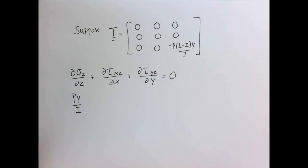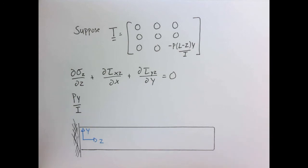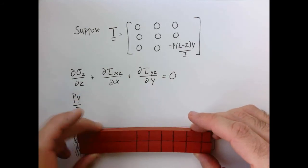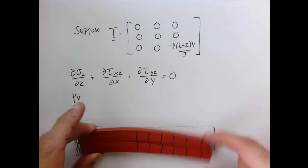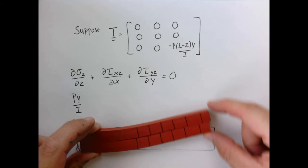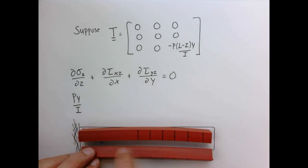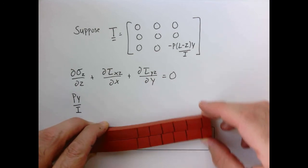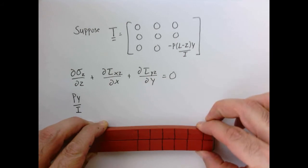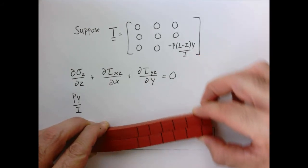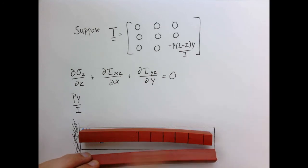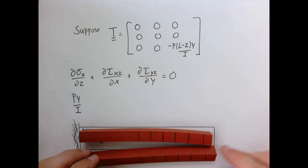Let's return to our sketch and look at a simple experiment. I take two rubber bars and hold them together to cantilever them at one end, then apply a load. You can see instantly there has to be shear stress because the bars slide past each other along that face. The original straight lines slide apart — and even when I pinch the bars tightly and push, there's still a tendency to slide in the middle, indicating shear stresses along those surfaces.